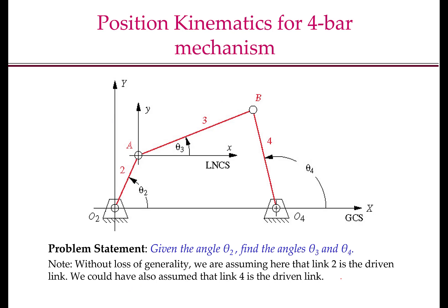So how do we formally state the position kinematics problem for a four-bar mechanism? Geometrically, a four-bar mechanism is a quadrilateral. Therefore, three angles — theta 2, theta 3, and theta 4 — are enough to specify the configuration of the four-bar mechanism. There can be other choices of these angles; I am choosing three that are convenient, and we will see why.